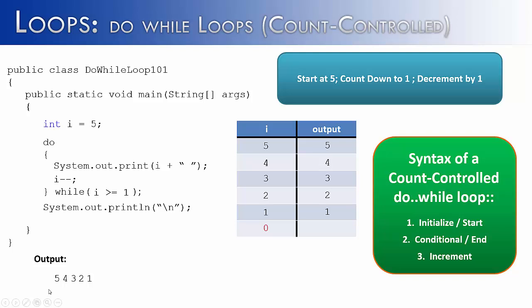So this time we have accomplished our goal. We started at 5 and counted down to 1, decrementing by 1 each time. The output is 5, 4, 3, 2, 1.